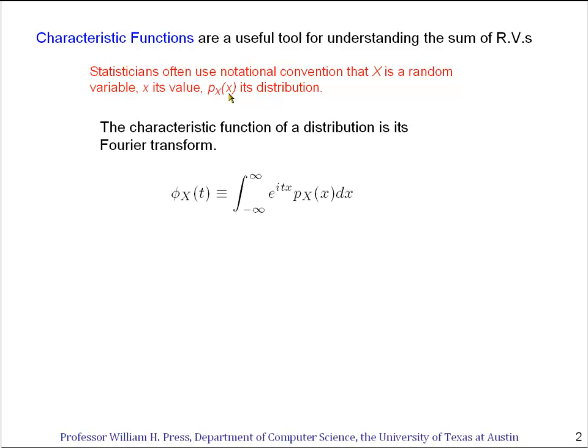So now to characteristic functions. The characteristic function of a univariate distribution is no more nor less than exactly its Fourier transform. If you recall, you can take any function of X, but now we're going to use p sub X of X.